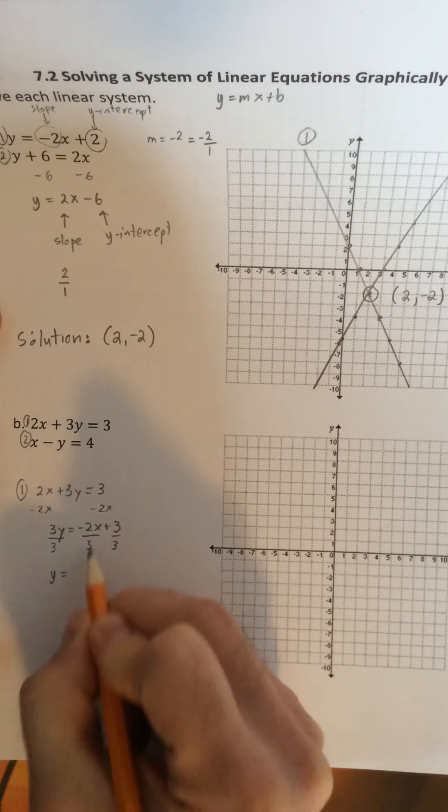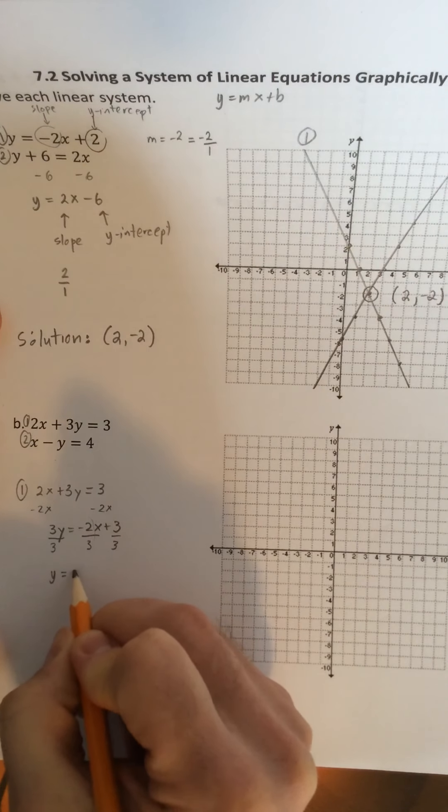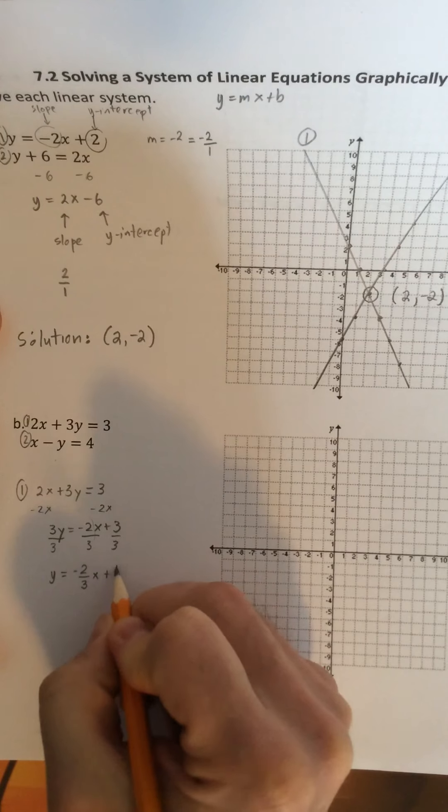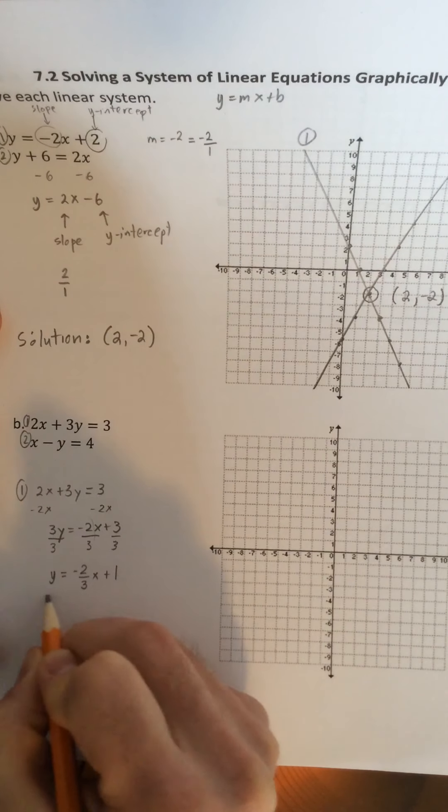Y equals, and I'm going to leave this as a fraction. Again, it is best to do that because it is a slope. Negative 2 thirds x plus 3 divide 3 is 1. So here's equation 1.